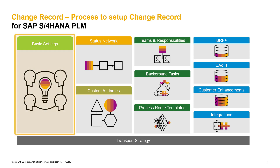First of all, you need to be aware of the basic settings of the change record. You should answer the following questions: Which number ranges do you want to assign to the change record? Do you want to count from zero to endless, or is a more complex number range necessary? Or do you maybe need different number ranges for different change record types?